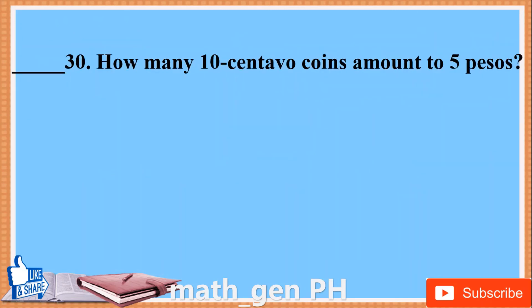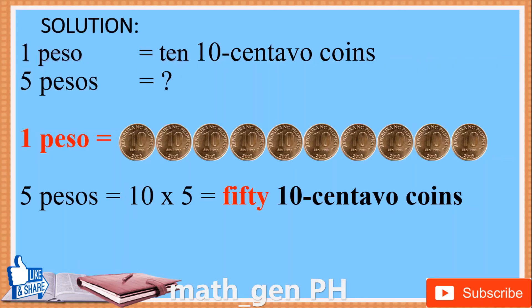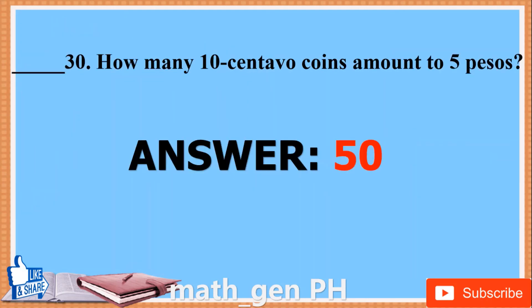Number 30. How many 10-centavo coins amount to 5 pesos? Solution. 1 peso is equal to 10 ten-centavo coins. If there are 10 ten-centavo coins in 1 peso, how many are there in 5 pesos? Multiply 5 by 10: 10 times 5 equals 50. In 5 pesos there are 50 ten-centavo coins. Answer: 50.